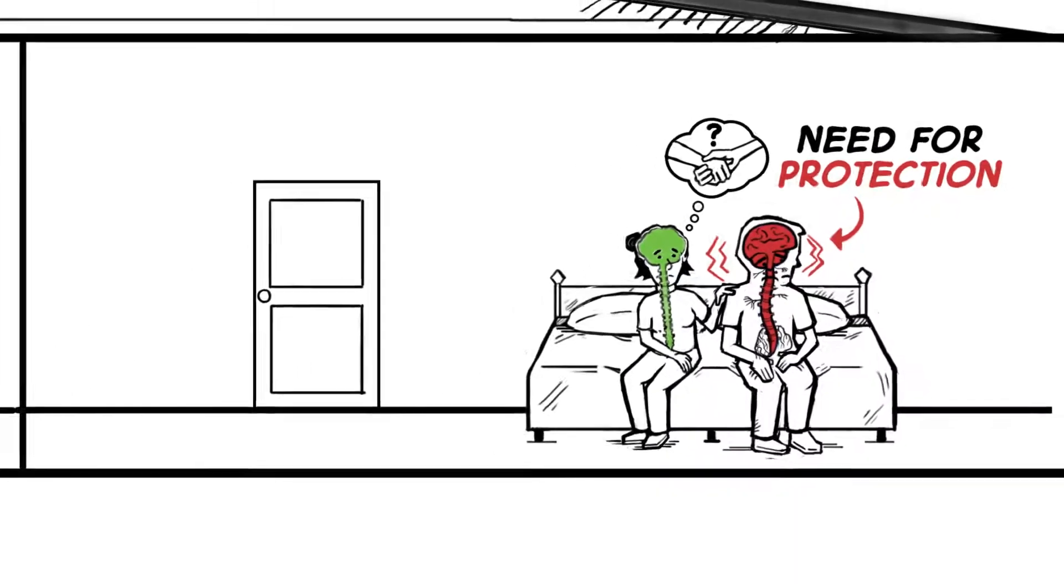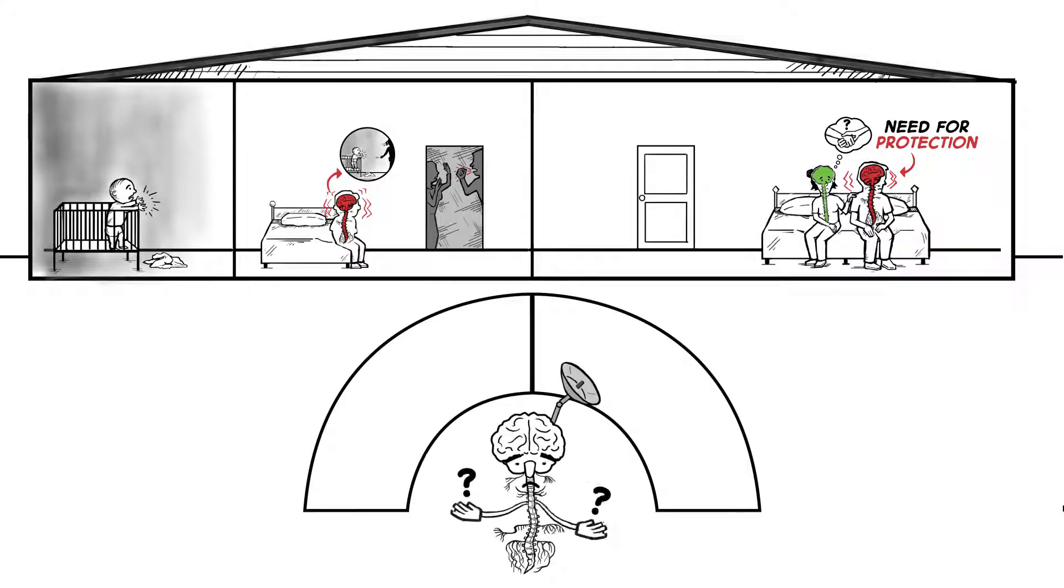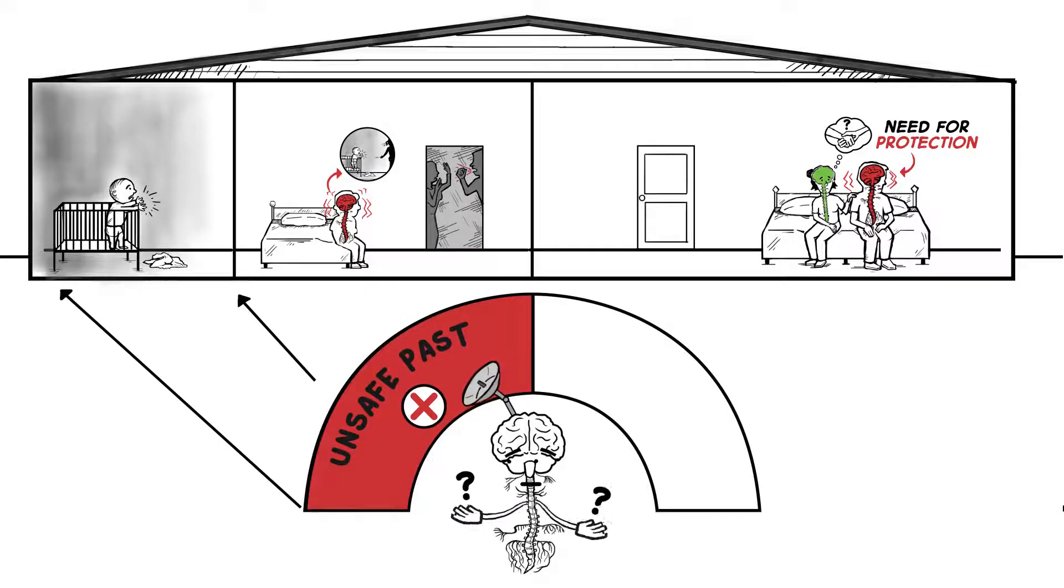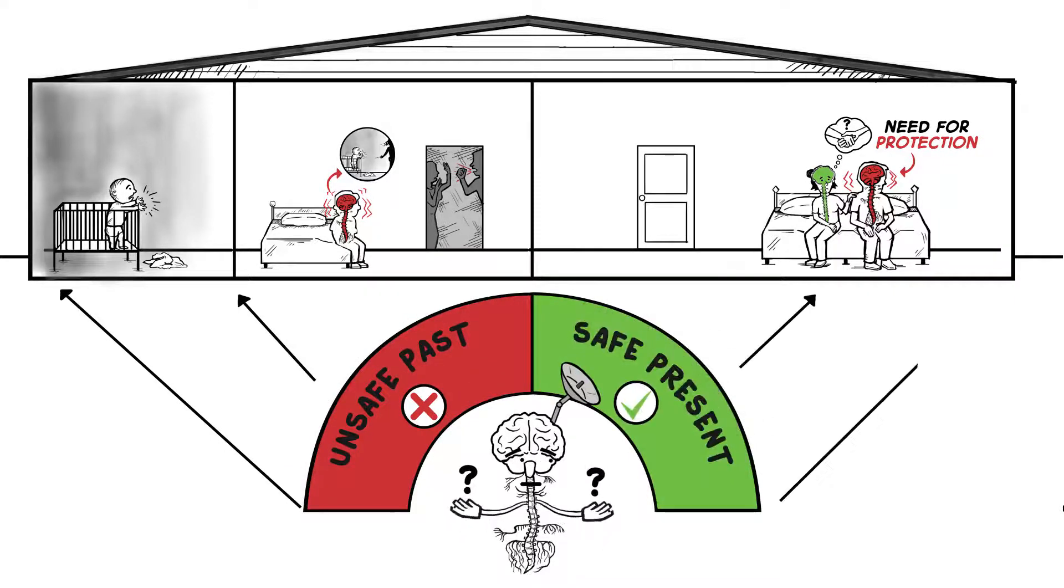When there has been trauma, ANS can no longer differentiate between our unsafe past and our now safe present. ANS can't turn off the need to protect, even though we are now safe.